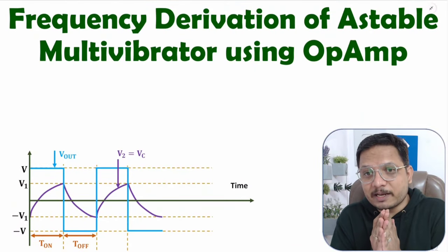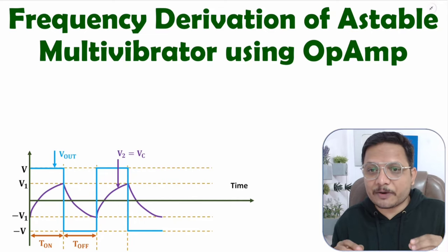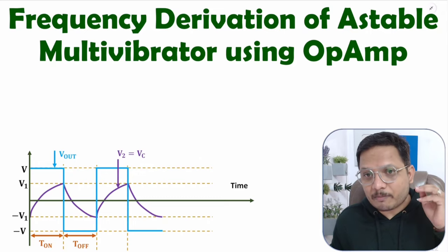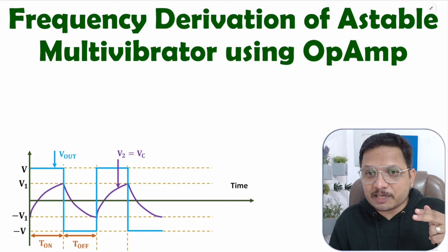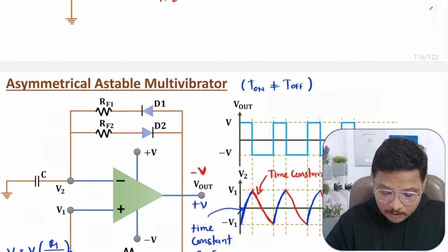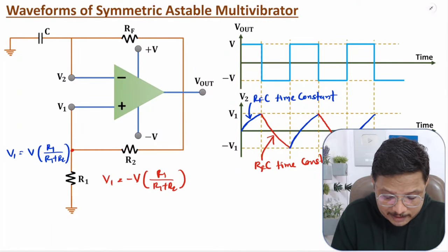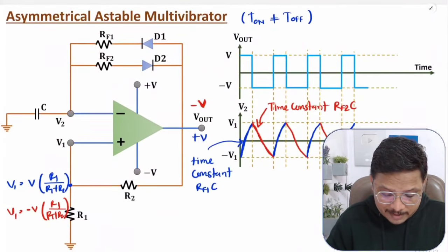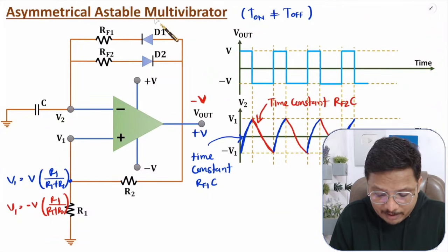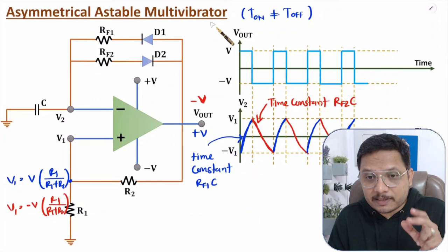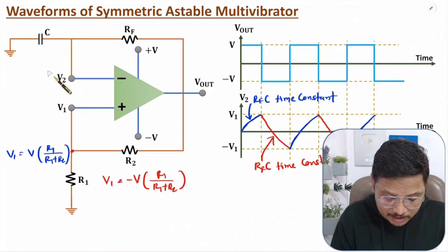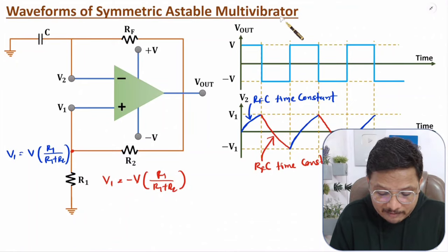Hello friends, welcome to Engineering Fanta family. In this video, I will be deriving the frequency equation for an astable multivibrator using an operational amplifier. Before you watch this video, I request you to go through my last video on astable multivibrator using op-amp, in which I explained two cases: symmetric and asymmetrical astable multivibrator. Here I will be deriving frequency for both of these. First, I will derive the frequency equation for the symmetrical astable multivibrator.